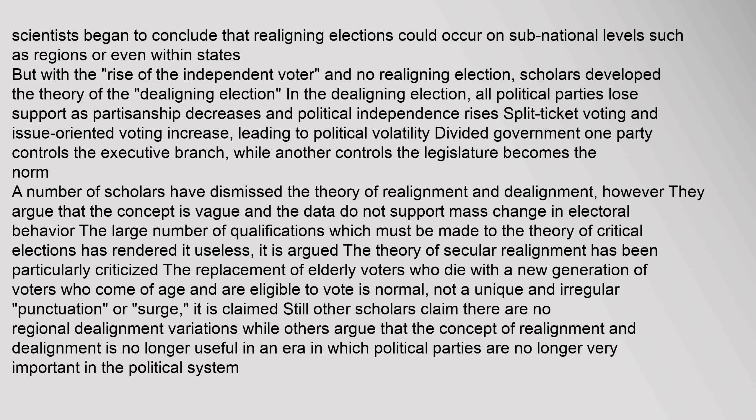With the 'rise of the independent voter' and no realigning election, scholars developed the theory of the 'de-aligning election.' In the de-aligning election, all political parties lose support as partisanship decreases and political independence rises; split-ticket voting and issue-oriented voting increase, leading to political volatility. Divided government — one party controls the executive branch while another controls the legislature — becomes the norm. A number of scholars have dismissed the theory of realignment and de-alignment, arguing that the concept is vague and the data do not support mass change in electoral behavior.